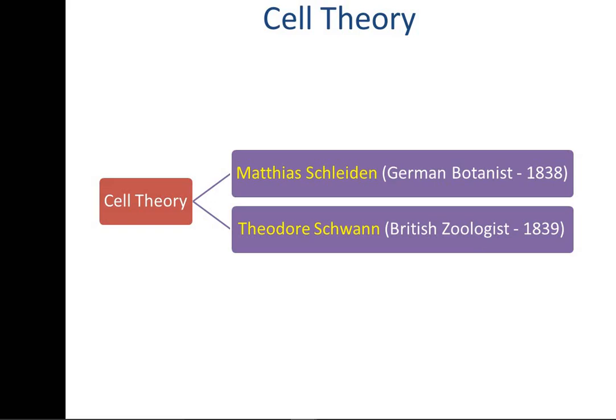If someone asks which of the following is a zoologist who proposed cell theory, and the options are Schleiden, Swan, or both, you can easily remember that the zoologist was Schwann. If you can identify the zoologist, then the other one — Schleiden — is automatically a botanist.